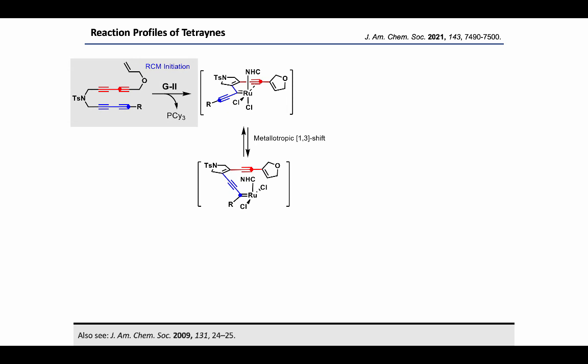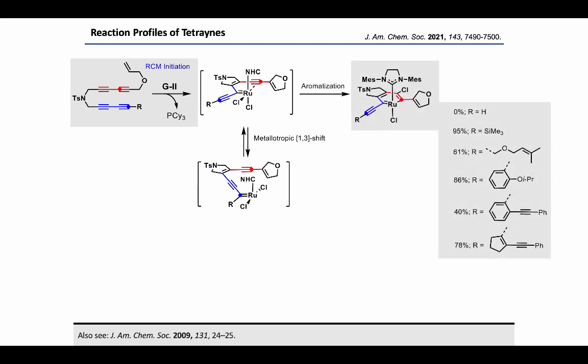Next, we investigated the reaction profile for tetraynes. In the case of tetraynes, we have the possibility of a metallotropic shift which can lead to the formation of various other types of products. Before metallotropic shift, there can be the usual aromatization leading to the formation of ruthenobenzene. The extent of metallotropic shift depends on the nature of the R substituent.